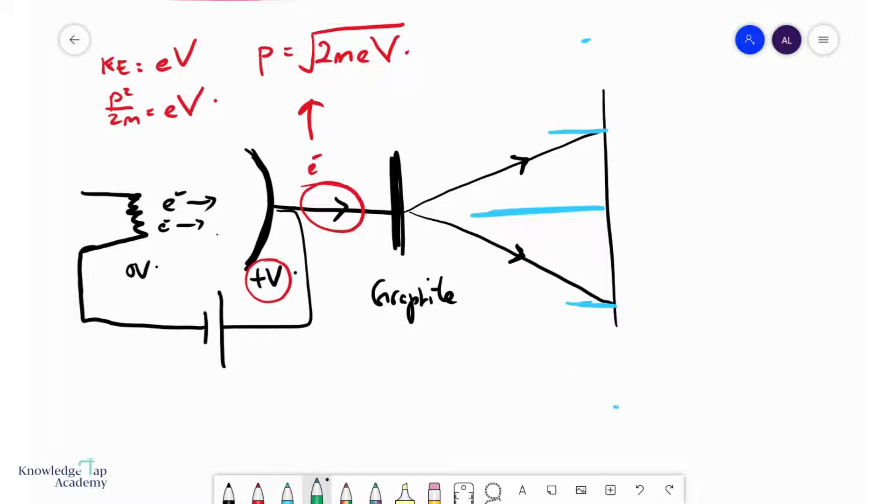Well, remember, de Broglie says that if I've got some momentum, then my electrons then possess a wavelength, which is h over p. And so it is h over square root 2mEV. And of course, since I have wavelength, I can diffract. And so indeed, we can use the formula d sine theta equals to n lambda to go and see exactly where all these peaks form.